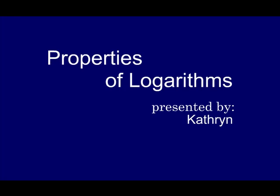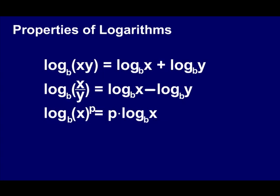Properties of logarithms. Let's look at the three basic properties of logarithms. The first one is the multiplication property — when you multiply, you add. When you divide, you subtract. The last one is the exponent property, and the exponent actually just pops out front. You can say P log base B of X.